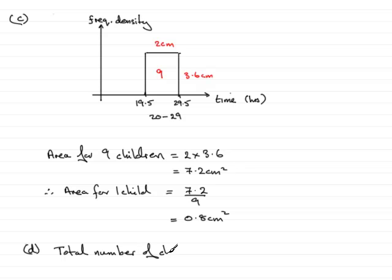So, the total number of children must be equal to 24 centimeters squared, and we must divide that by 0.8, because every time we have 0.8 centimeters squared, it represents one child. Doing this division,